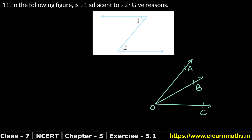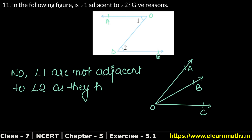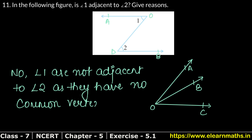For adjacent angles there must be a common vertex. You might say this is also a common arm for angle 1 and angle 2, but if we look at the vertex: angle AOB has vertex O, but if we name it as A, O, D and B, the vertex of angle 1 is O and the vertex of the other angle is D. So we can say: No, angle 1 is not adjacent to angle 2, as they have no common vertex.